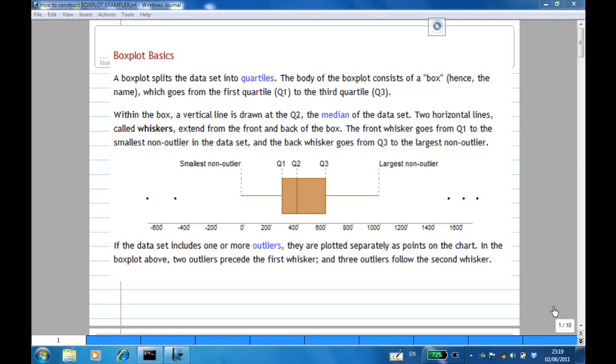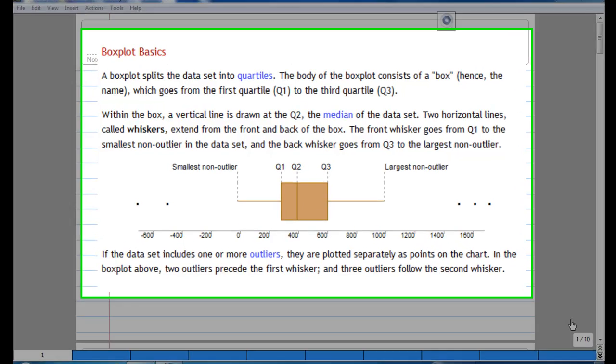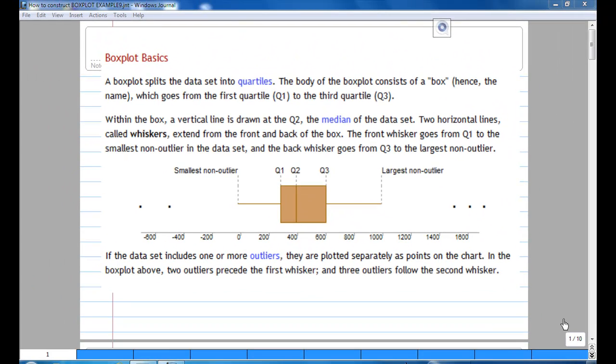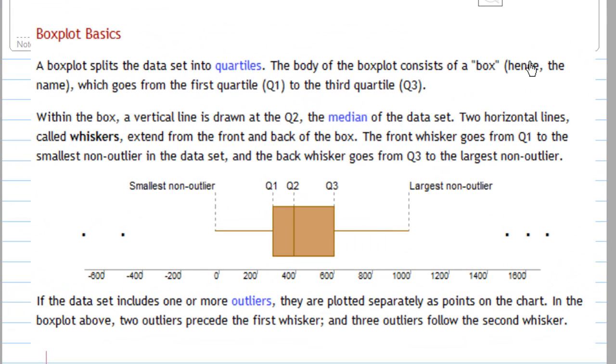This recording will show you how to construct box plot and interpret box plot. A box plot splits the data set into quartiles. The body of the box plot consists of a box, hence the name, which goes from the first quartile Q1 to the third quartile Q3.